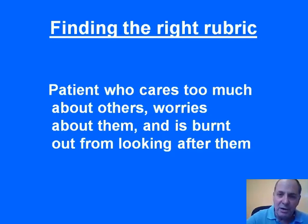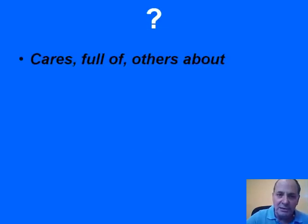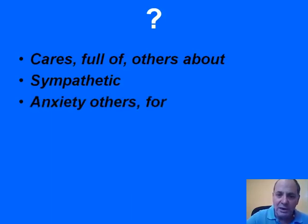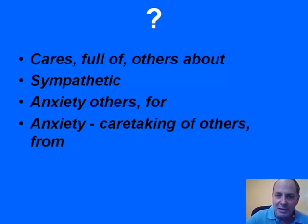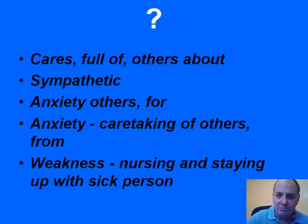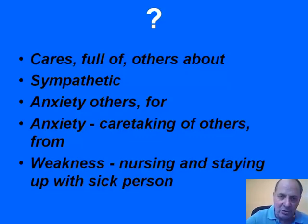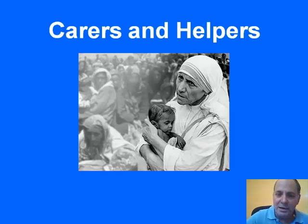This is a very common phenomenon, but what rubric do we choose? There are many facets to this concept. For instance, we could take 'full of care for others,' we could take 'sympathetic,' we could take 'anxiety for others,' we could take 'anxiety from care-taking of others,' or 'weakness from nursing the sick.' Each one of these is a relatively small rubric, and combining them is time-consuming and not necessarily accurate.